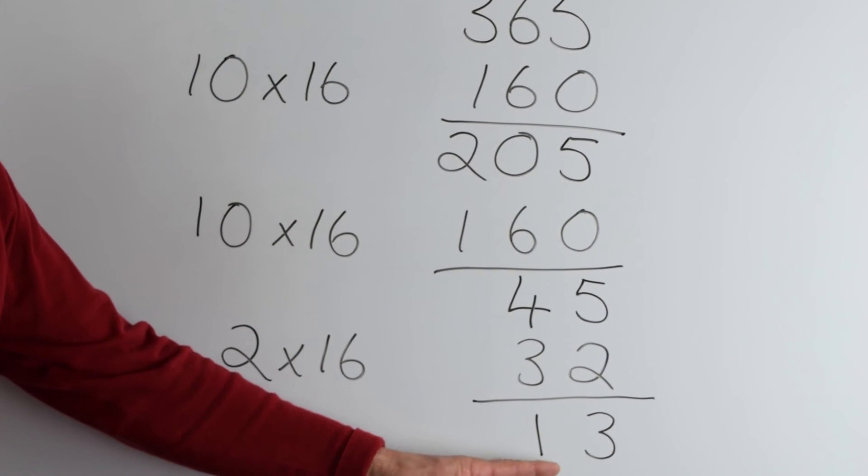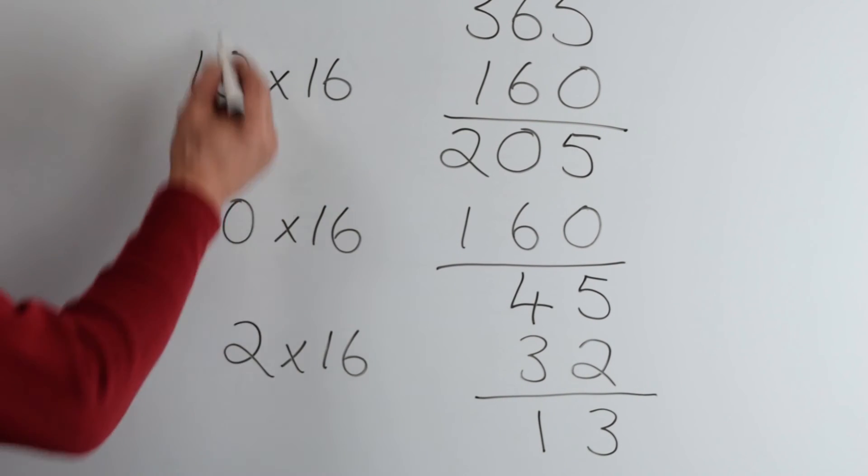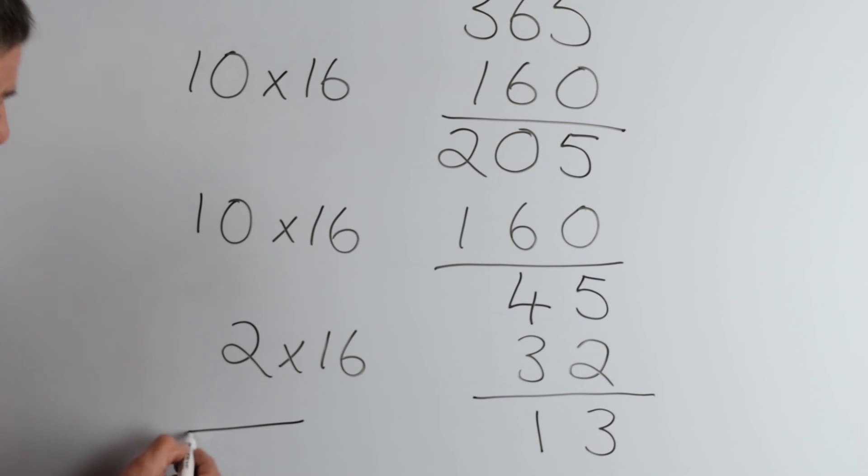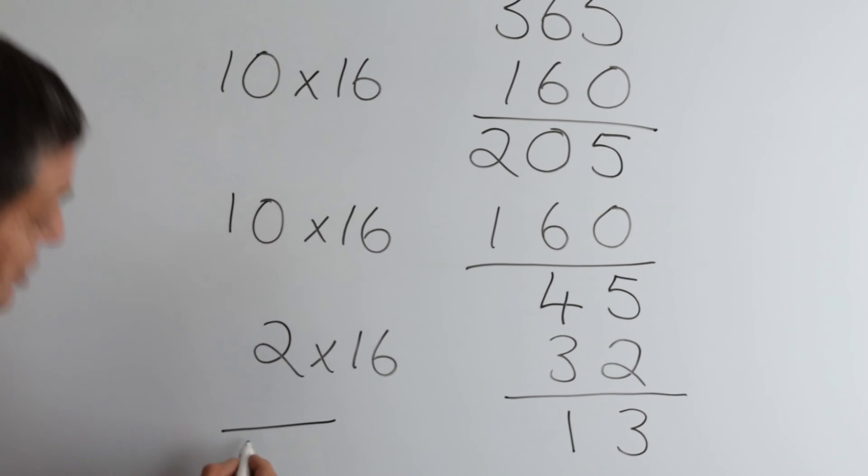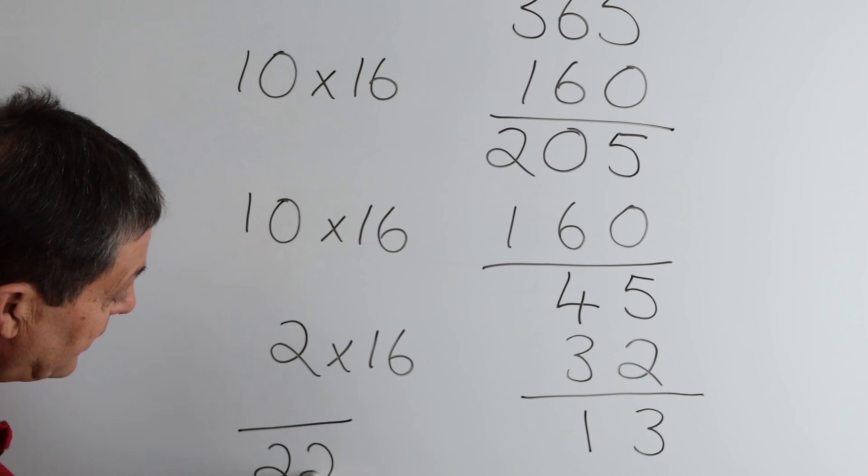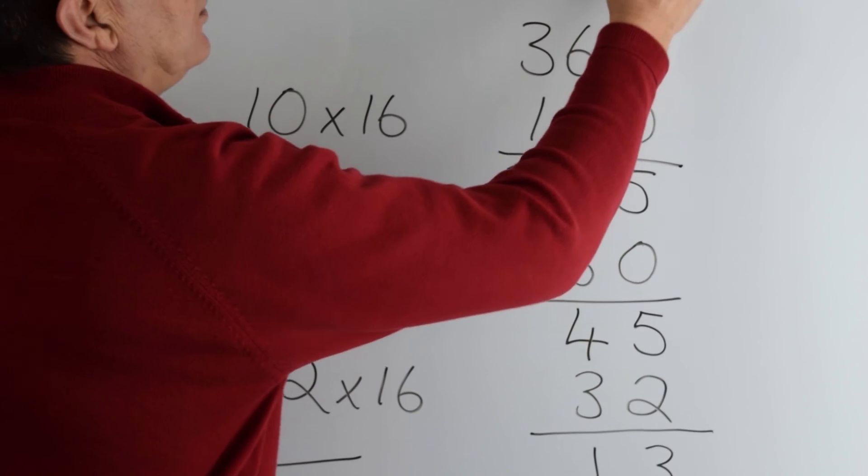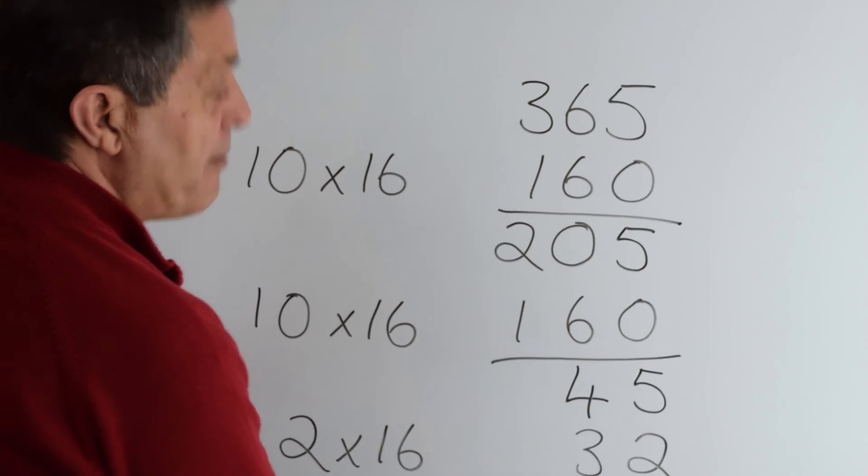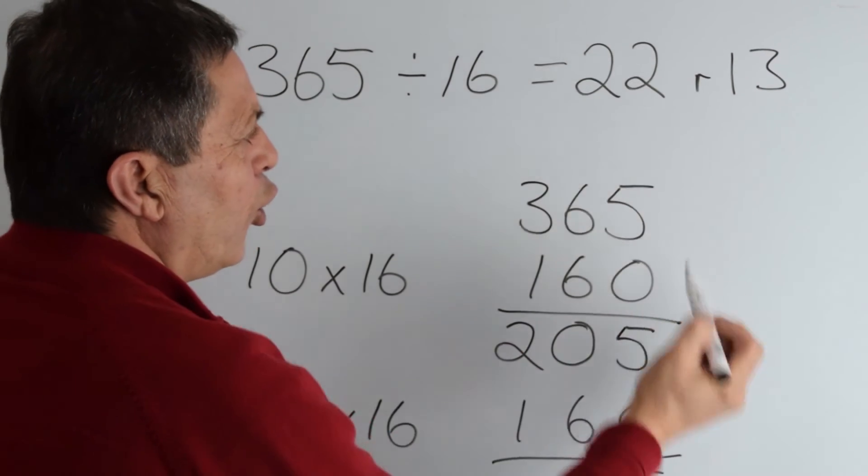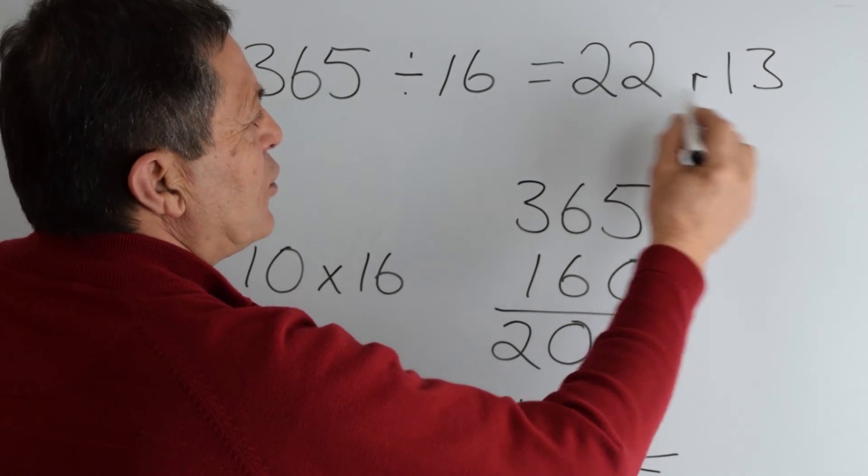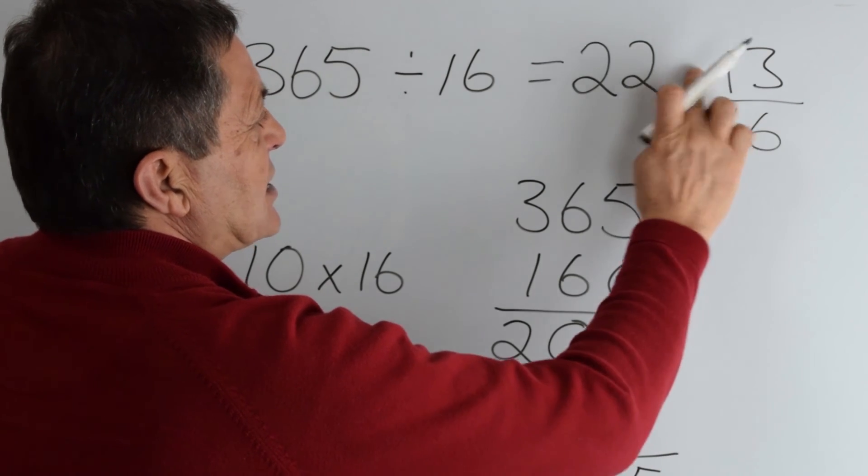13, we can't take another 16 away. So let's add up our multiples. 10, 10, 2 is 22. The answer is 22 remainder 13 or 22 and 13 sixteenths.